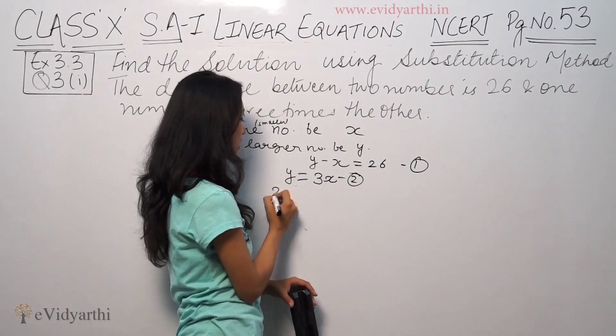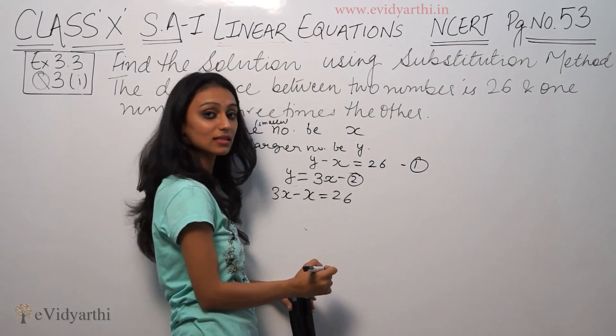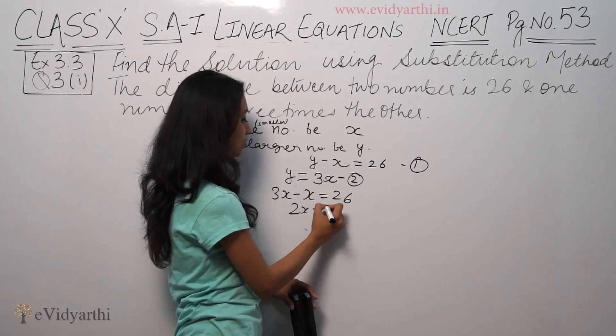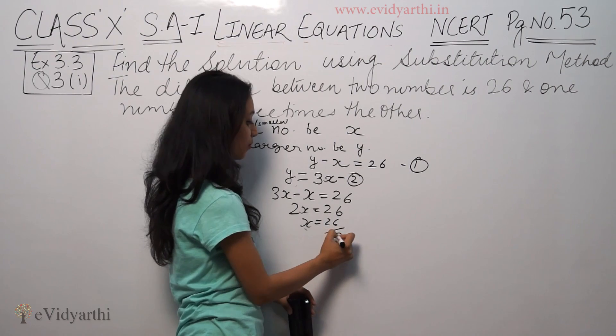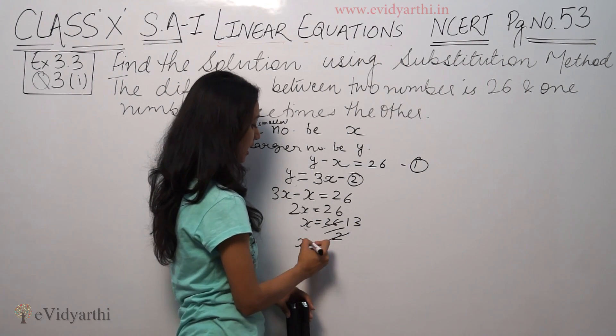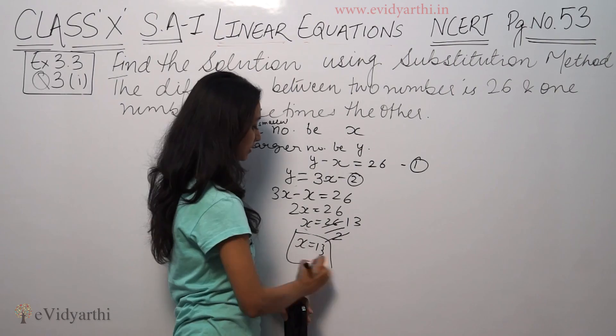Substituting, we get 3x minus x equal to 26, so 2x is equal to 26. x is equal to 26 divided by 2, which gives us x equals 13.